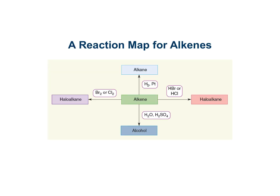On the next slide there's a helpful reaction map where we have alkenes and you can see what we would react and which type of molecule would form. If we have an alkene with hydrogen and platinum it forms an alkane; with HBr or HCl it forms a haloalkane or alkyl halide; with Br2 or Cl2 we also get a haloalkane or alkyl halide; and with water plus sulfuric acid as catalyst we get an alcohol.